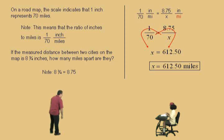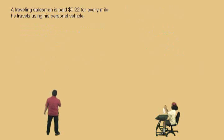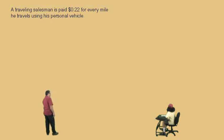Alright, Charlie, let's keep going. Here we go. Now, a traveling salesman is paid 22 cents for every mile he travels using his personal vehicle. Now, notice, it's a dollar sign up there, right? Dollar, 0.22. That means .22 dollars, which is actually 22 cents, same thing.